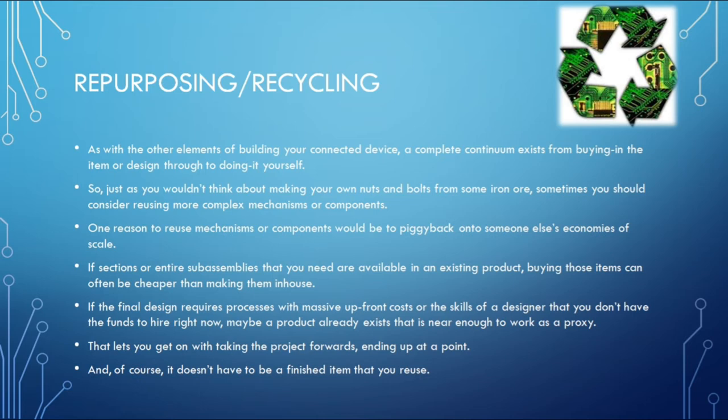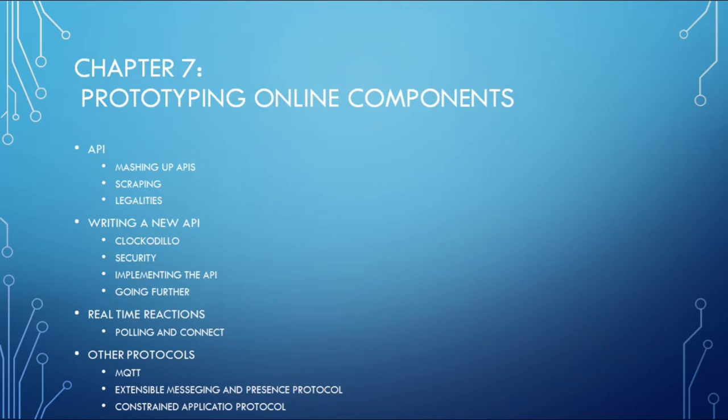If part of your product or an entire sub-assembly you need to design is already available in the market, it is better to buy rather than making it in-house. This chapter provided a good grounding in building a physical prototype of your IoT device. Moving ahead, the next chapter is prototyping online components.